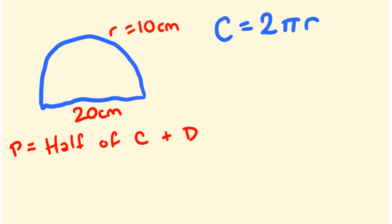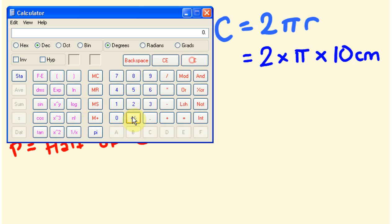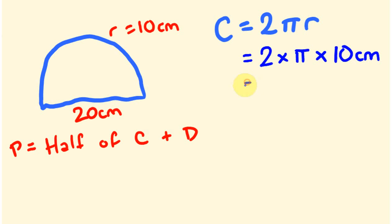Now let's work out what C is. The circumference equals 2 times pi times the radius, which is 10, so times 10 centimetres. Let me get the calculator: 2 times pi times 10 equals 62.83. So the circumference equals 62.83 centimetres.